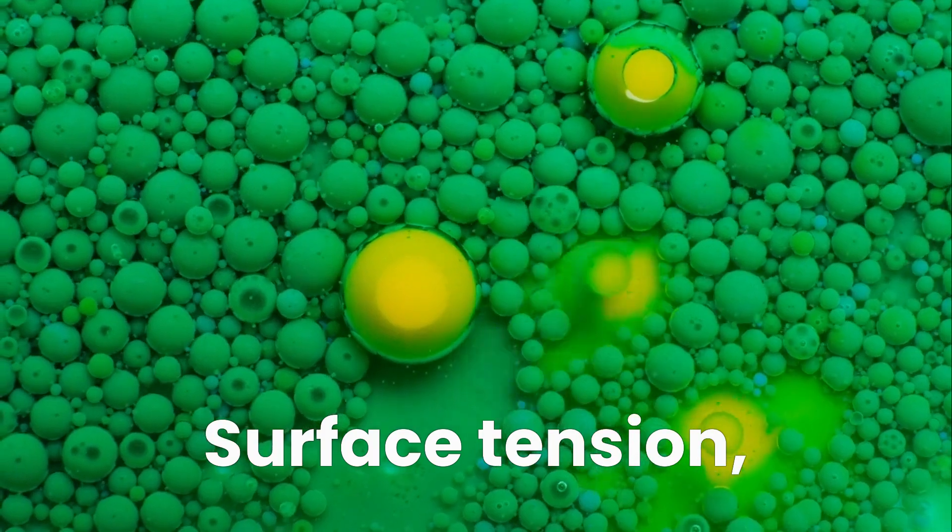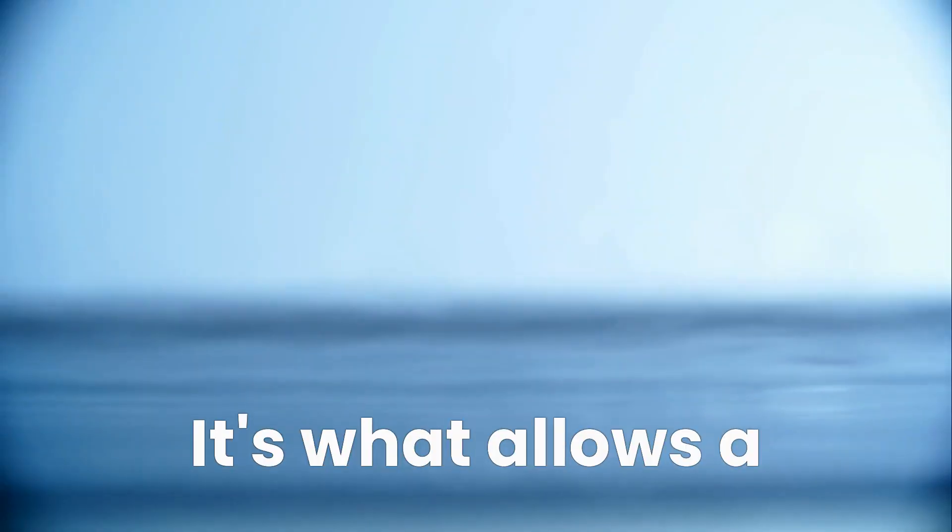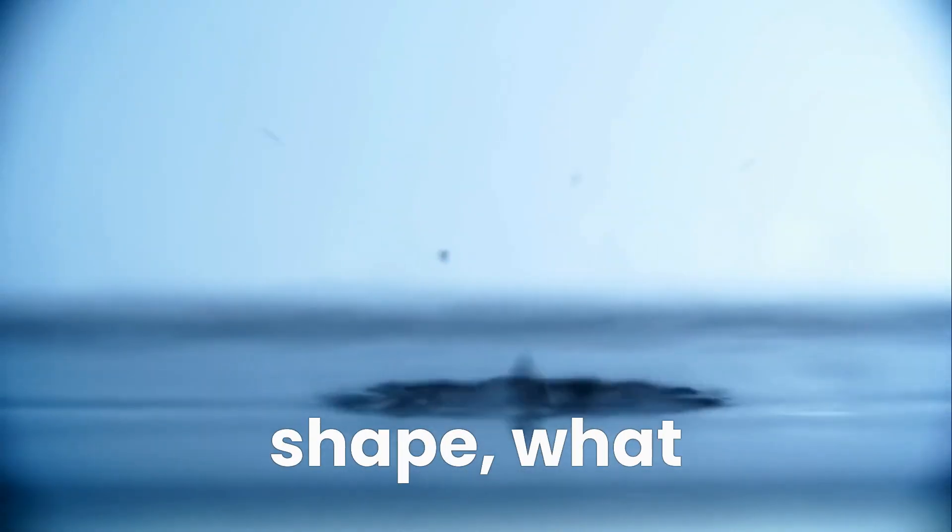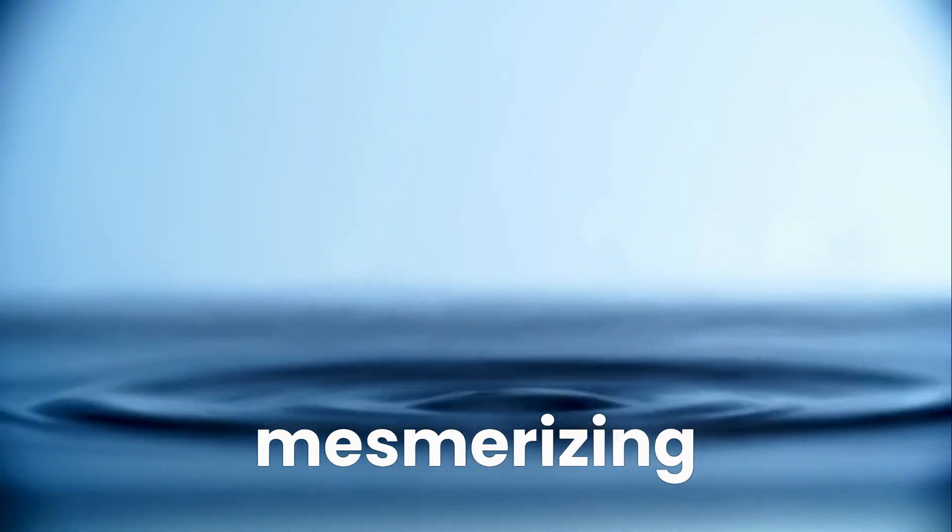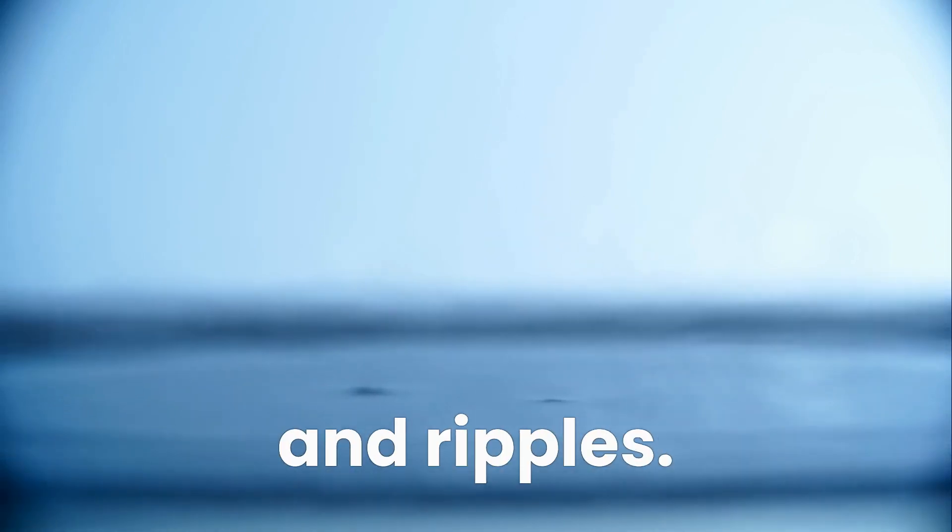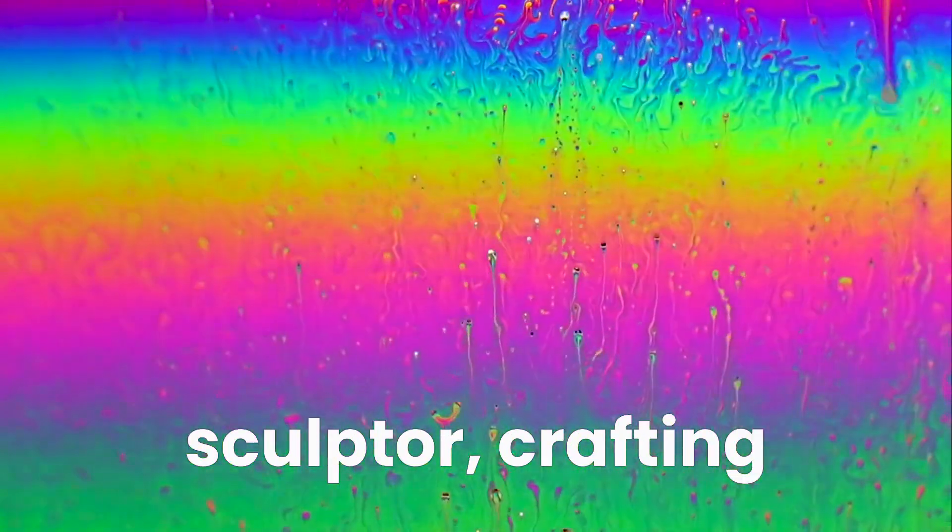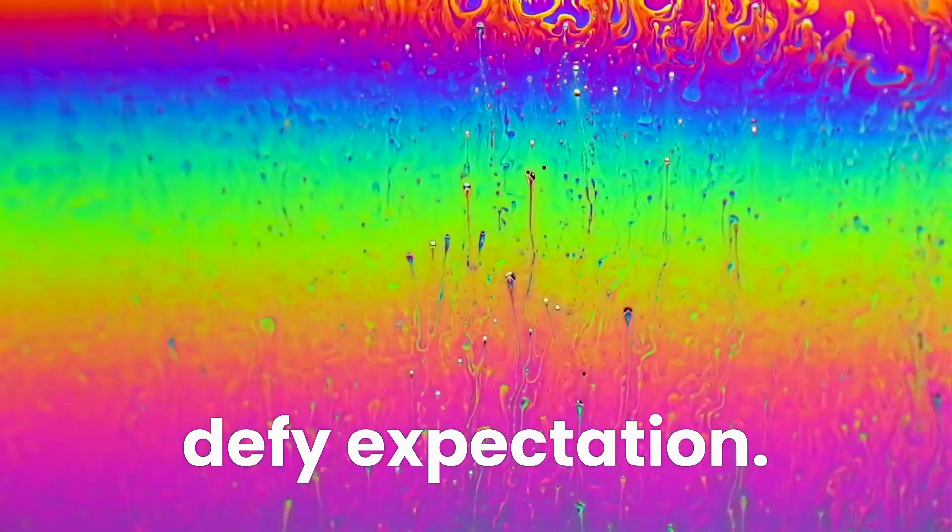Surface tension, another invisible force, is the unsung hero of liquid behavior. It's what allows a droplet to hold its shape, what creates the mesmerizing patterns of a splash, and what gives liquids their ability to form bubbles, waves, and ripples. In slow motion, surface tension becomes a sculptor, crafting intricate shapes that defy expectation.